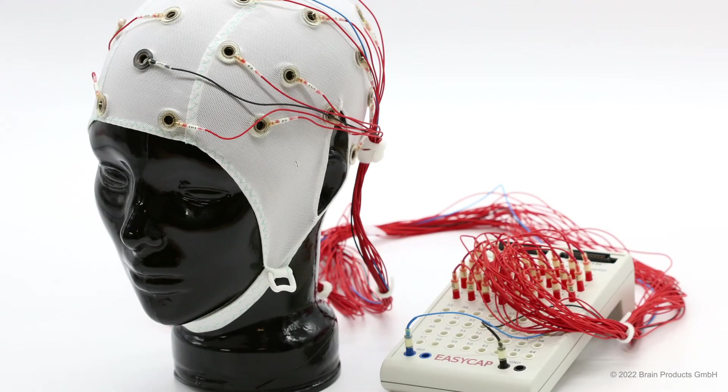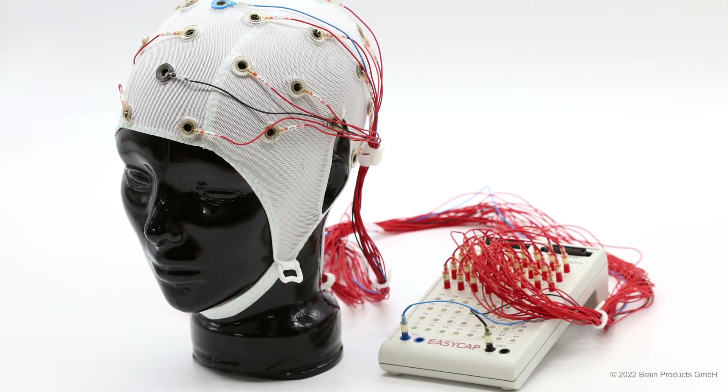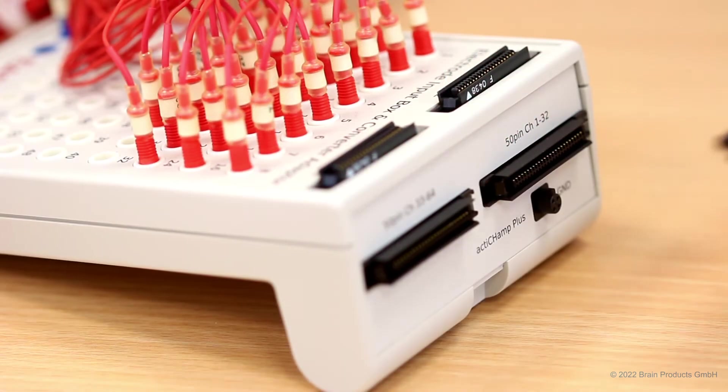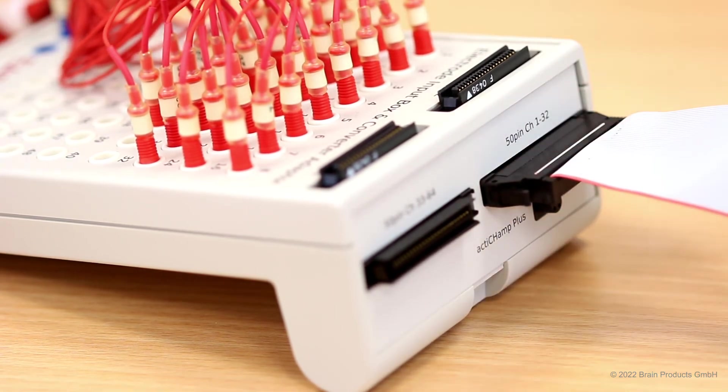If you are using a cap with individual touch-proof connectors, like the brain cap TMS, first insert the single touch-proof in the electrode input box, and then connect the other end of the BAK cable to the 50-pin connector of channels 1-32 of the electrode input box.